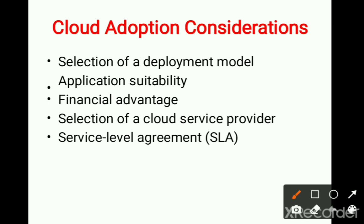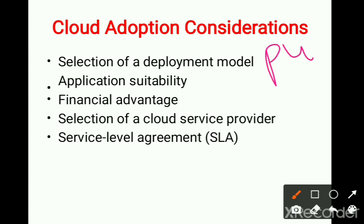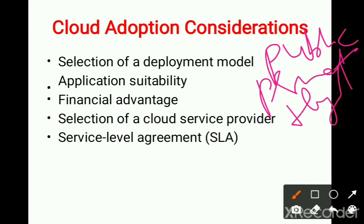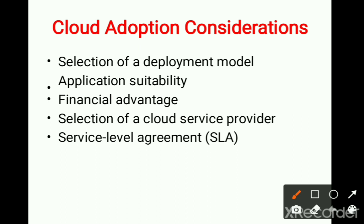Let's look at the first one: selection of the deployment model. As we have already seen, the various deployment models are public cloud, private cloud, hybrid cloud, and community cloud. Among these, the consumer has to select the appropriate model. For public cloud, the advantages include less capital investment, but disadvantages relate to network and interoperability issues.